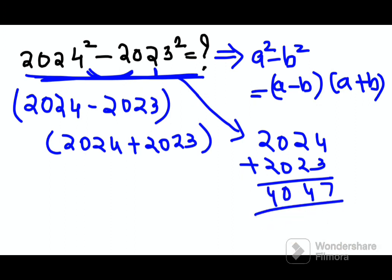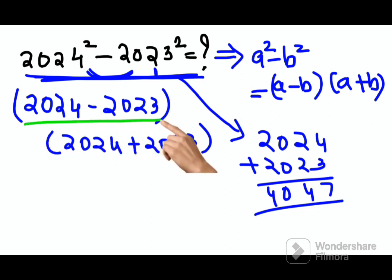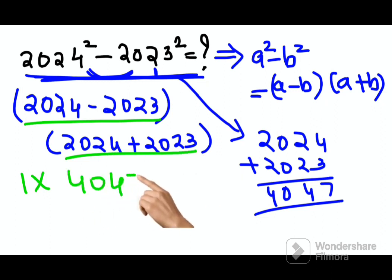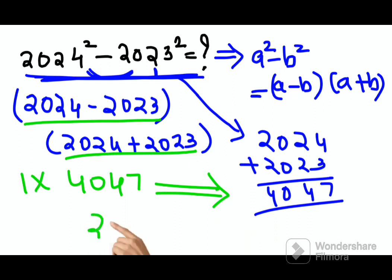You might be wondering why. If you look closely, after the expansion this comes out to be 1 into just the sum. The sum is 4047, and 1 into 4047 is nothing but 4047.